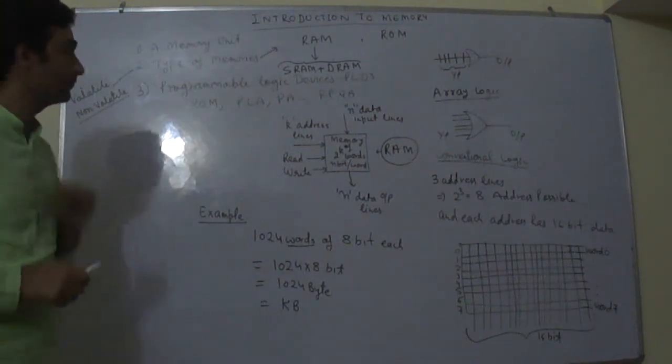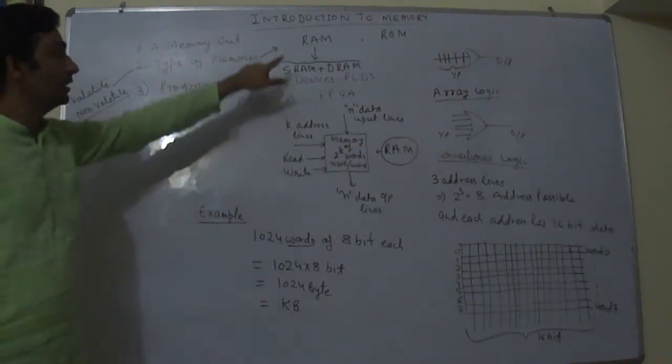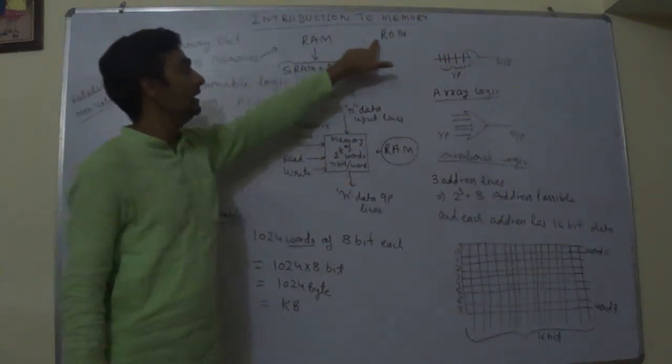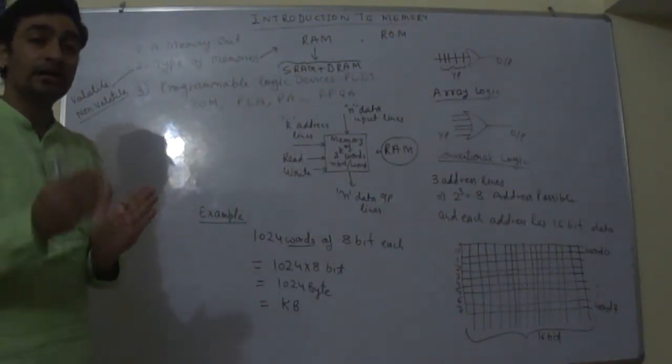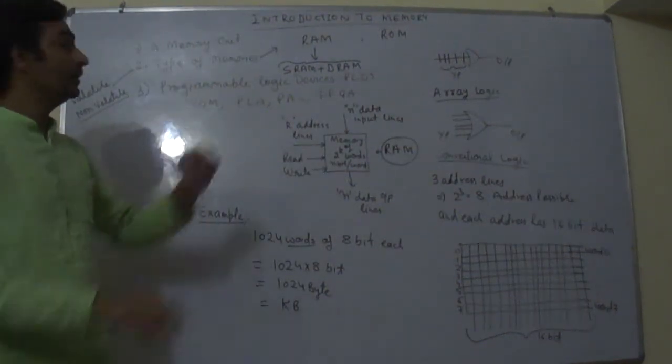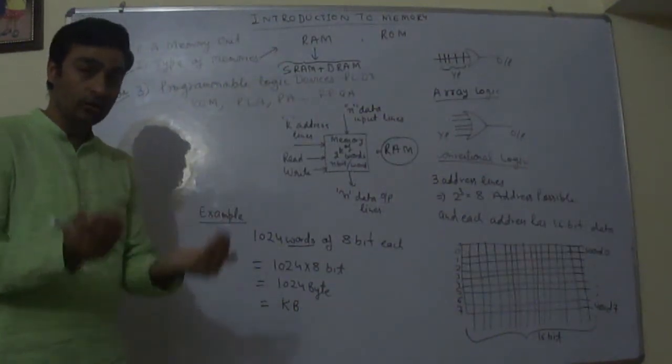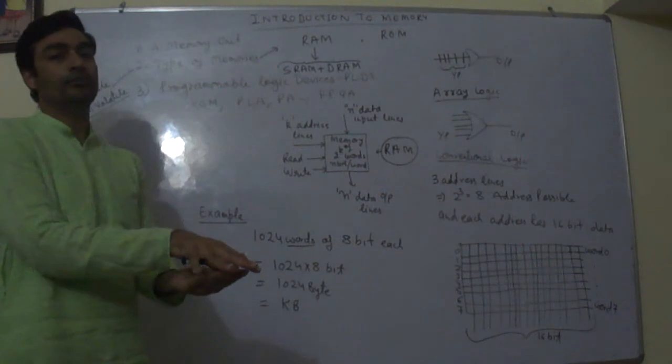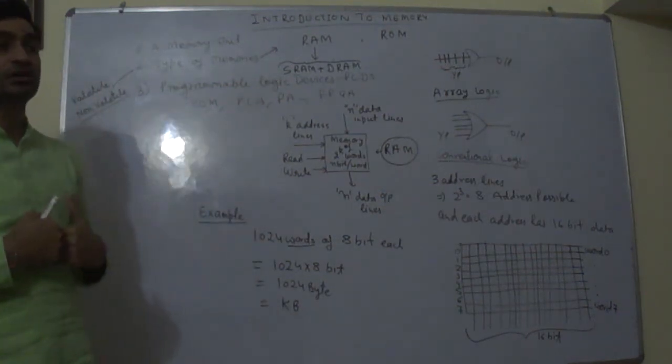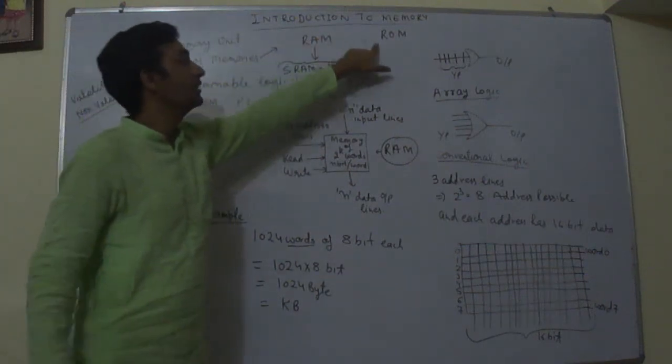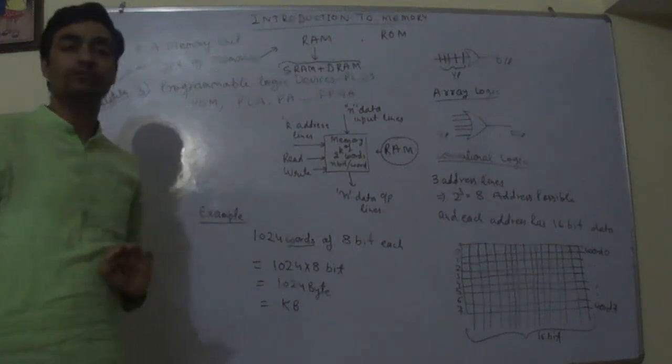There are various types of memories that we have: random access memory and read only memory. The memory which we can read but we cannot write on, and the random access memory is the one which we can read also and we can write also. We can change that memory location and extract the memory location. That is RAM. Here we cannot change the memory location; we can always extract the data from memory location, like listening to a song from a CD.